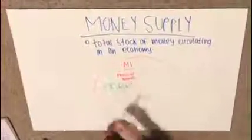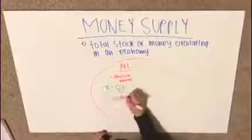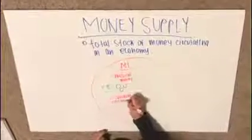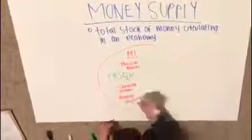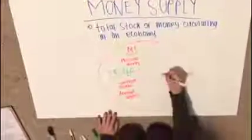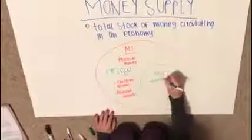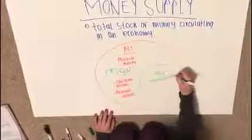In class we discussed M1 and M2. M1 includes physical money — coins and cash. M2 includes elements of M1 along with savings, deposits, and mutual funds.